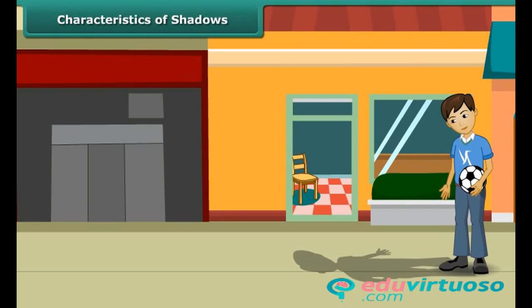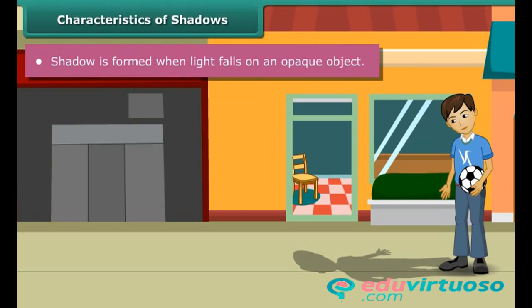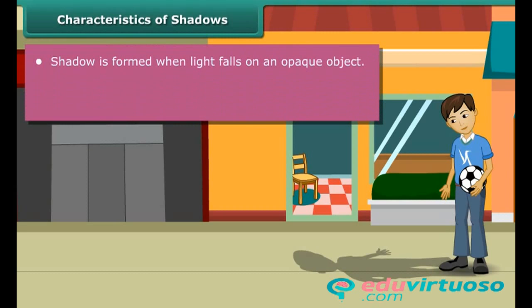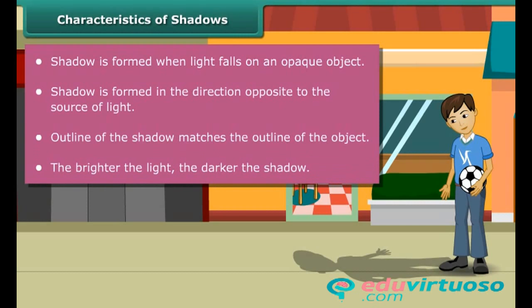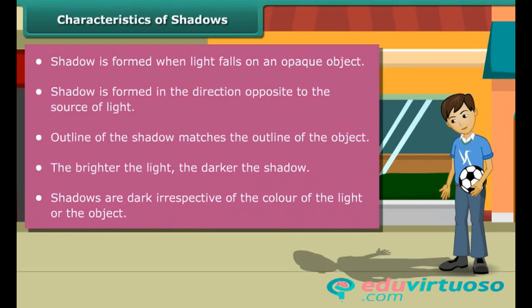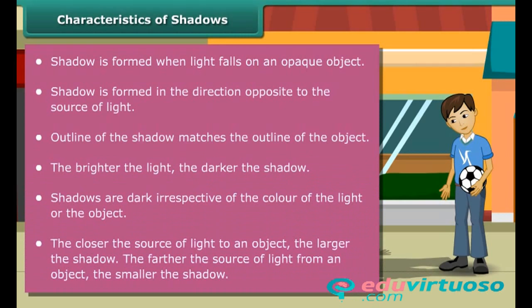Let us list the important characteristics of shadows. Shadow is formed when light falls on an opaque object. Shadow is formed in the direction opposite to the source of light. The outline of the shadow matches the outline of the object. The brighter the light, the darker the shadow. Shadows are dark irrespective of the color of the light or the object. The closer the source of light to an object, the larger the shadow. The farther the source of light from an object, the smaller the shadow.